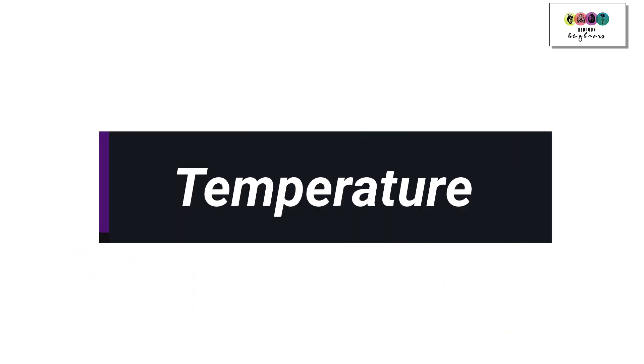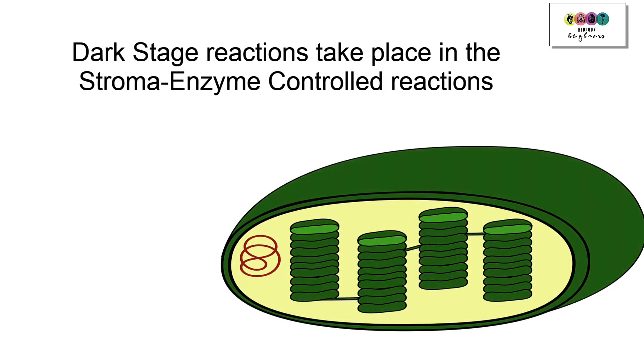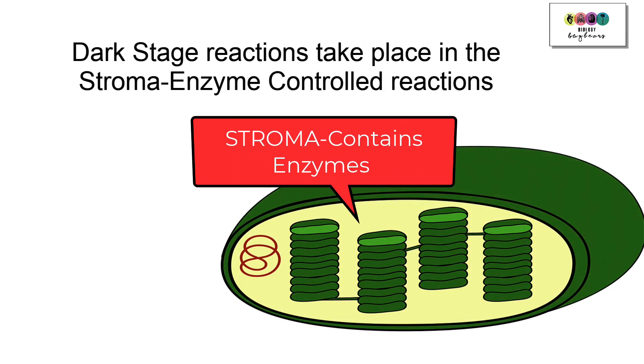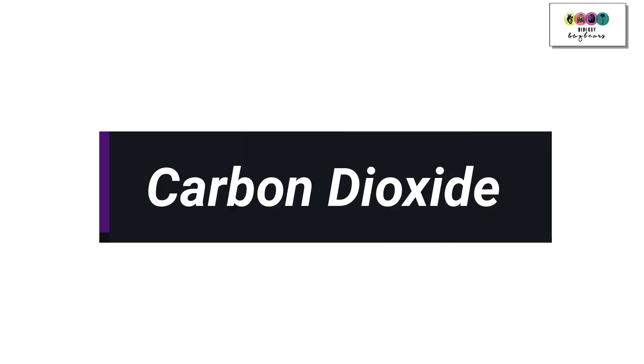The next consideration would be temperature because the dark stage reactions take place in the stroma of the chloroplast and the stroma contains enzymes. Plant enzymes work best within a temperature range of between 25 and 30 degrees Celsius so the use of heaters to ensure this temperature is maintained could be an idea.